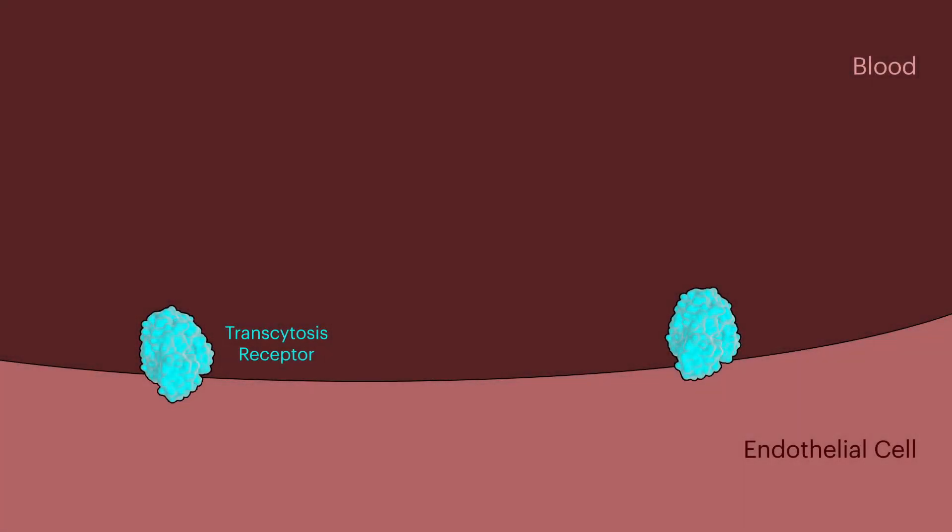After discovering new candidate receptors, the team will develop antibodies that bind to them. Then, the specific antibody domain that directly contacts the transcytosis receptors will be isolated and fused to existing antibody drugs targeting brain diseases.